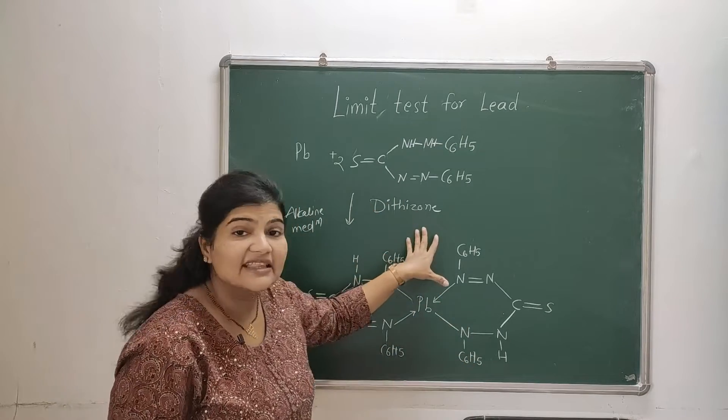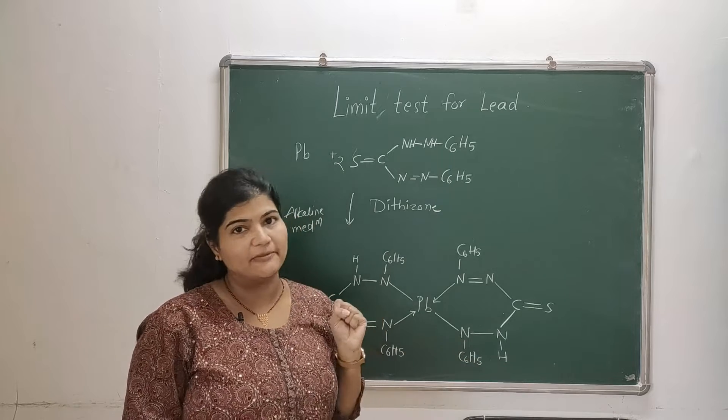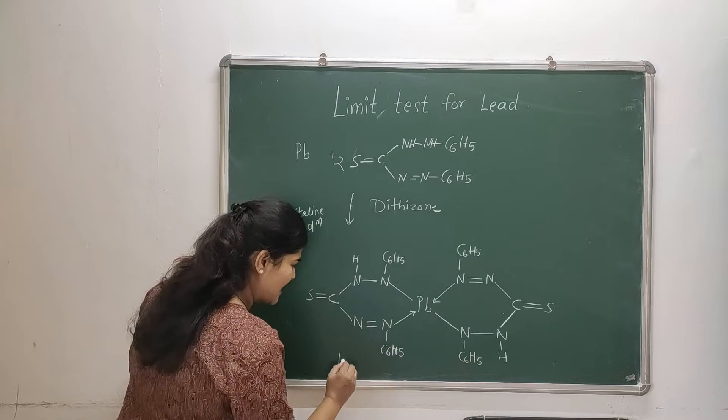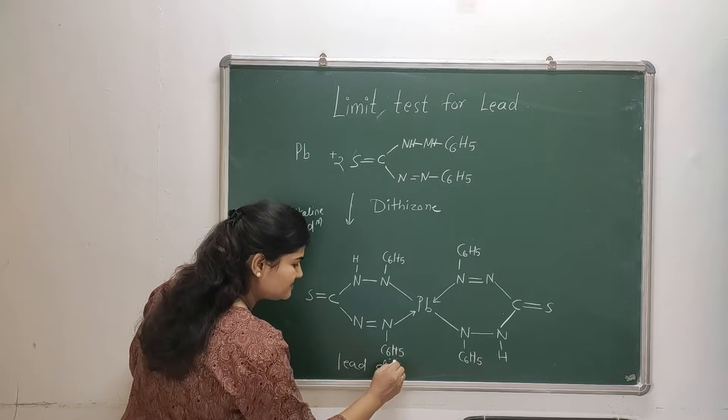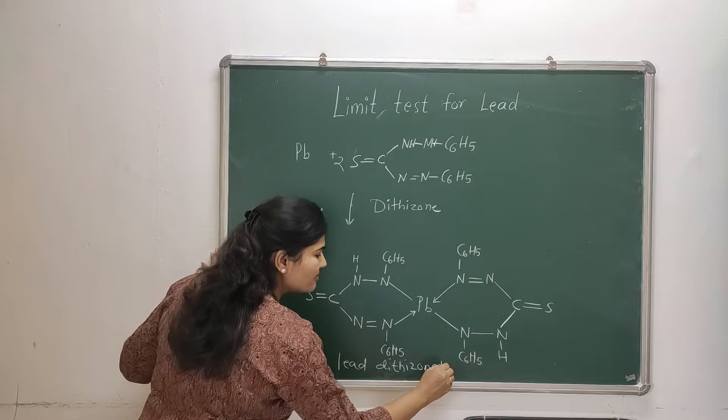And the hydrogen on this nitrogen will again be removed to form a covalent bond with this lead. So this is how the lead dithizonate complex will be formed. This will be referred as lead dithizonate complex.